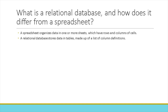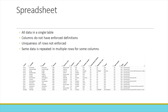So now we really get started. What is a relational database and how does it differ from a spreadsheet? A spreadsheet organizes data in one or more sheets, which have rows and columns of cells. A relational database stores data in tables made up of a list of column definitions. In a spreadsheet, all the data is in a single table, but the columns do not have enforced definitions. Uniqueness of rows is not enforced, and the same data is repeated in multiple rows for some columns out of necessity.